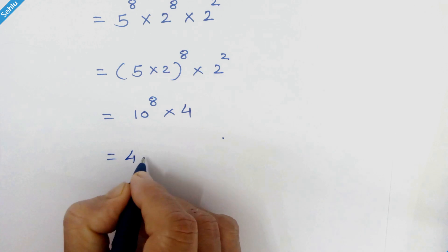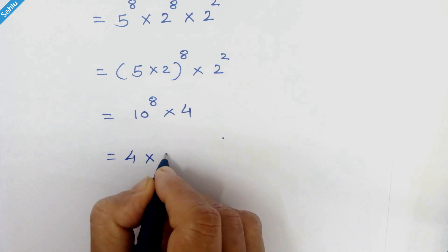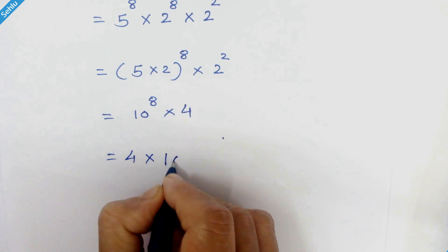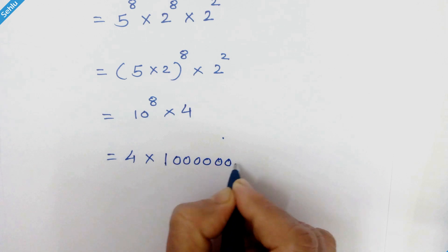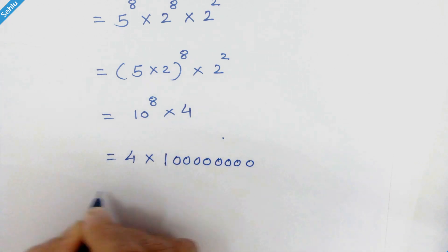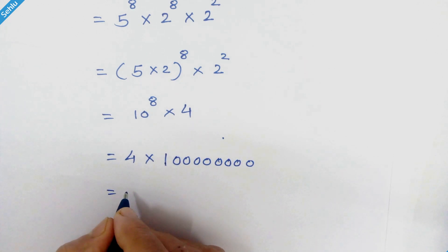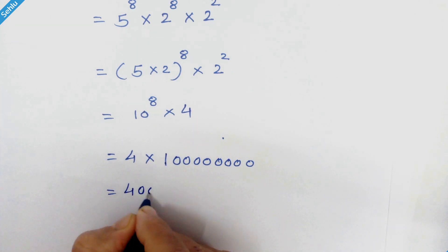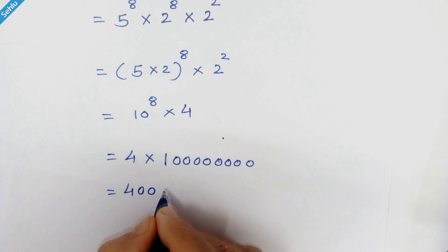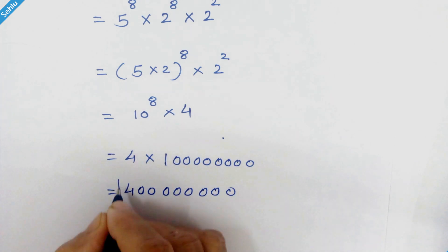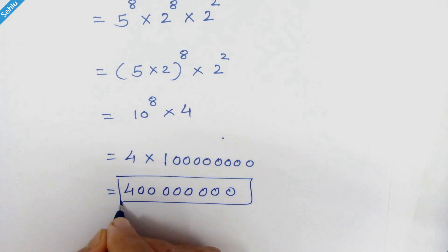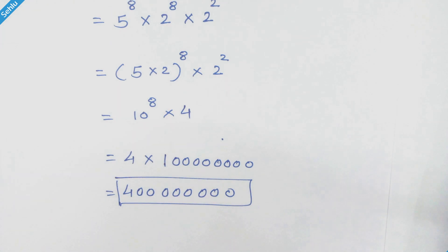So we have 4 times 100,000,000, which is equal to 400 million. And that's the answer. Thanks for watching, see you in the next one. Bye-bye.